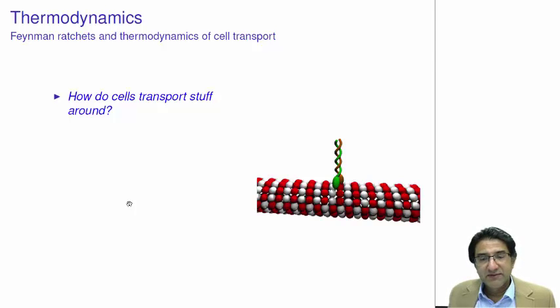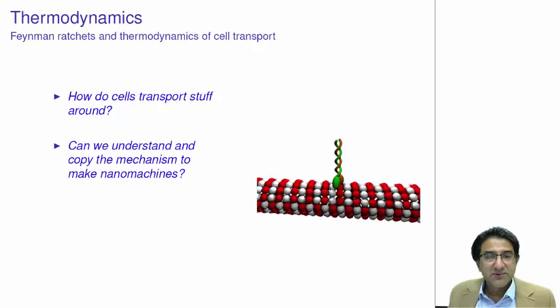One of them is by diffusion, for example, but there are active forms of transport. Can we understand and copy the mechanisms to make nanomachines, for example?